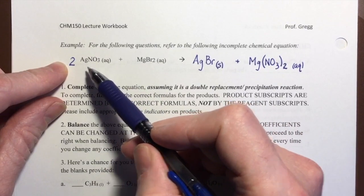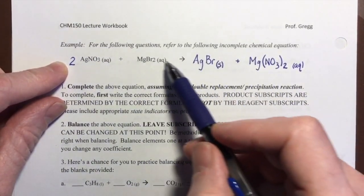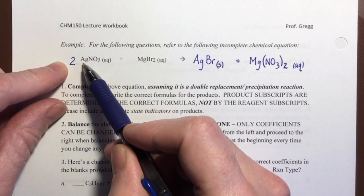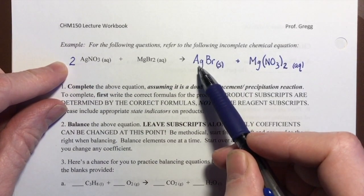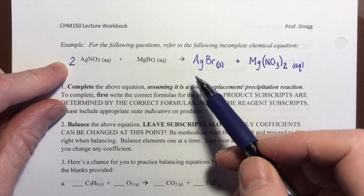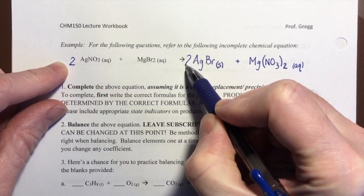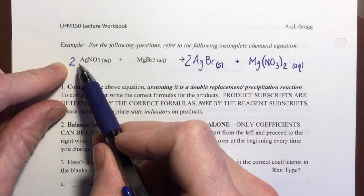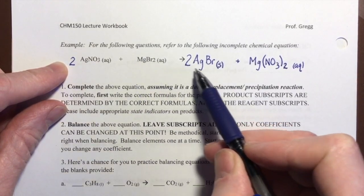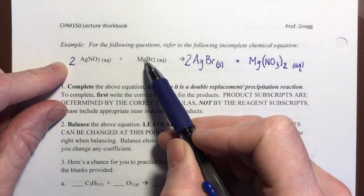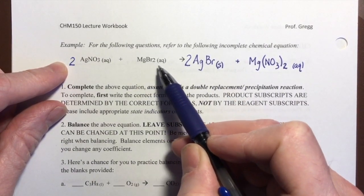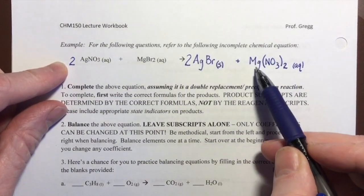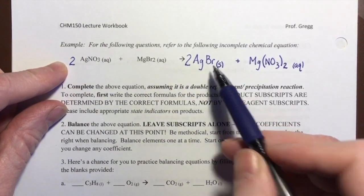So two silvers, one silver. Aha! So we changed the number of silvers and now we have to fix that. Two silvers, two silvers, two nitrates, two nitrates. I'm continuing on methodically. One magnesium, one magnesium. Two bromines, two bromines. So two silvers, two silvers, two nitrates, two nitrates. One magnesium, one magnesium. Two bromines, two bromines, and it's balanced.